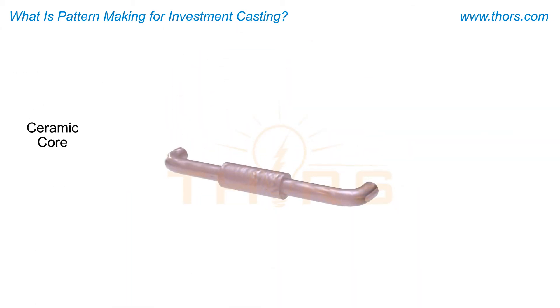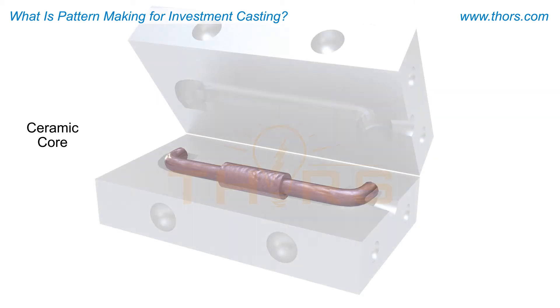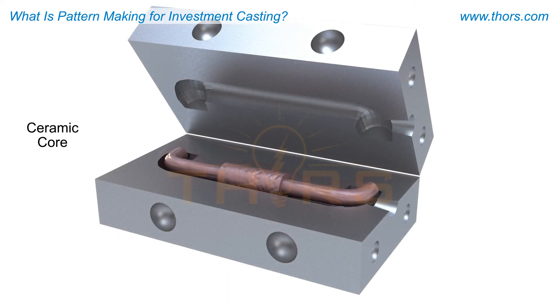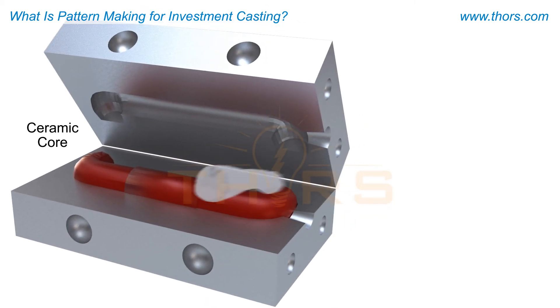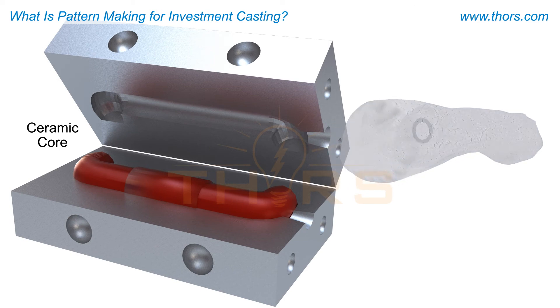Ceramic core tooling is filled with the same ceramic slurry used in mold making. The core is placed in the injection dye, and the ceramic core will fuse with the ceramic coating applied during mold making.